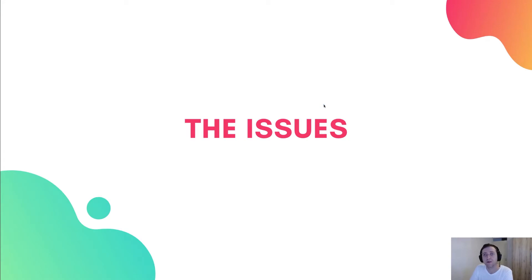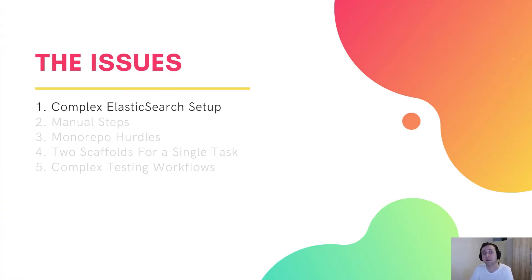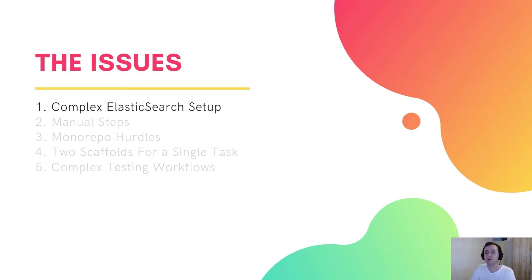Based on the feedback we were receiving from our users, we discovered five key issues present in the existing scaffolding utilities and the related development workflows. The first issue was complex Elasticsearch setup. If you were using the GraphQL API service scaffold, which basically creates a set of CRUD query and mutation GraphQL operations, you may have noticed that the generated code actually interacts with two databases: DynamoDB and Elasticsearch.